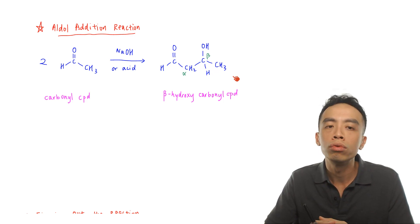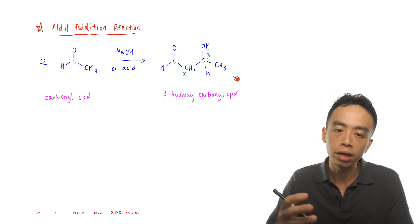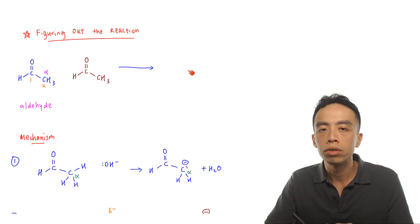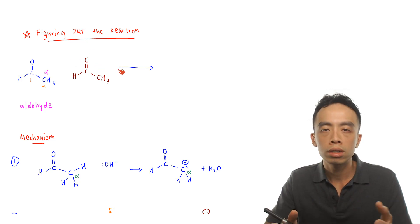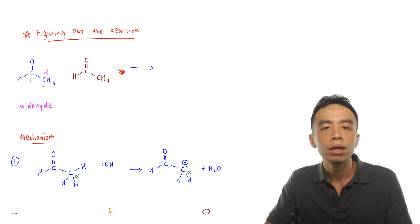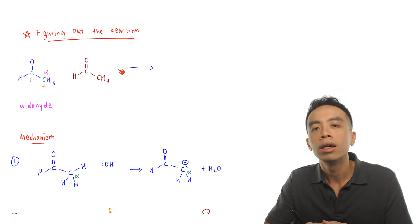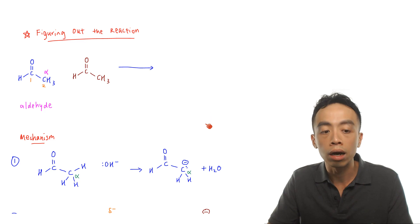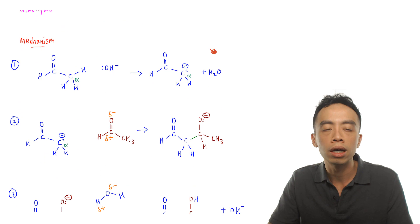We need to recognize that the products form beta hydroxy carbonyl compounds, because in exam questions we need to identify the possible products of aldol addition reaction. To understand how this hydroxy carbonyl compound forms, we will use ethanal reacting with ethanal as our example and run through the mechanism in detail — not to memorize it, but to understand how the aldol product is formed.